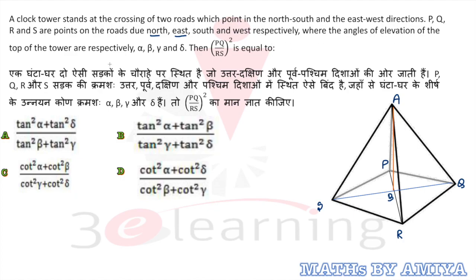Where the angles of elevation of the top of the tower are alpha, beta, gamma, delta. Here the angle is nothing but alpha. At P, we have alpha.